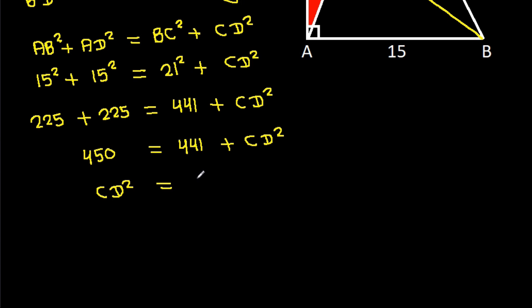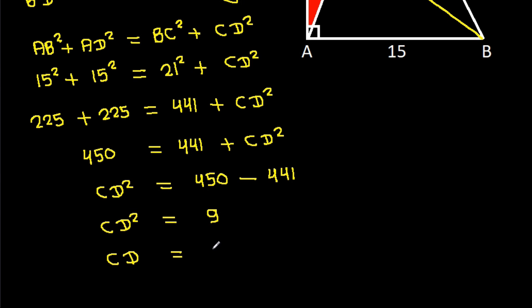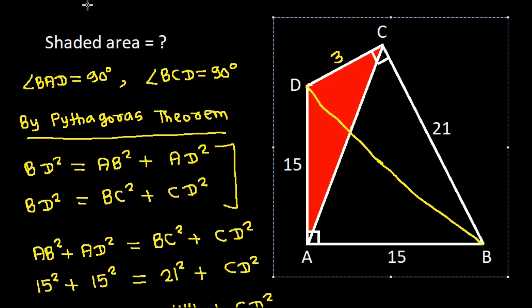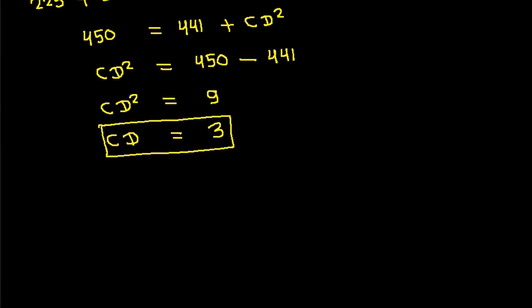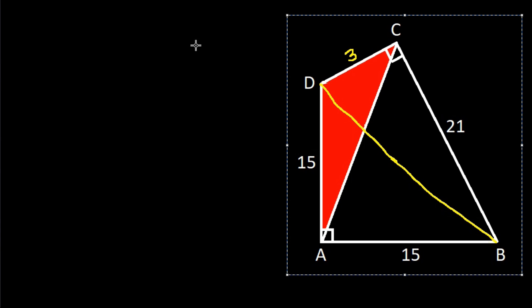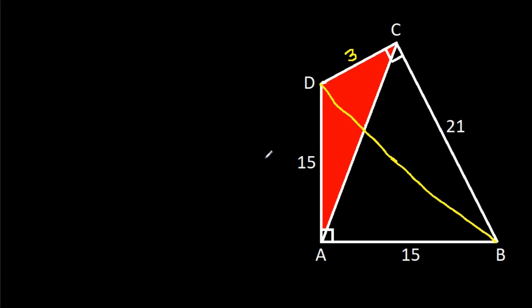So CD squared equals 450 minus 441, which gives CD squared equals 9. Therefore CD equals 3.